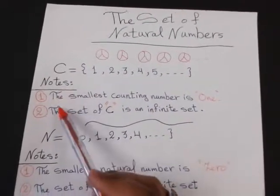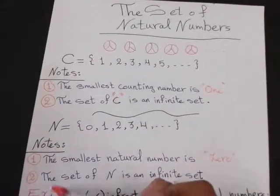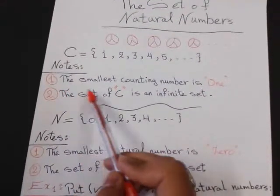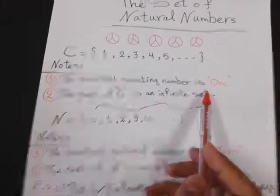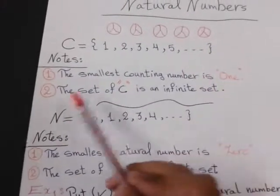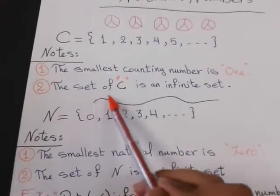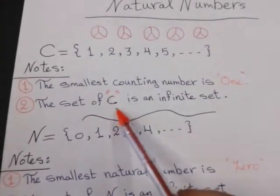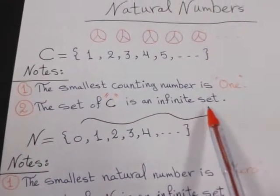We have two notes on the set of counting numbers. The first one is the smallest counting number is 1. Number 2, the set of counting numbers is an infinite set.